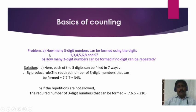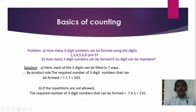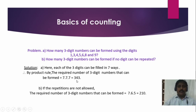How many 3-digit numbers can be formed using the digits 1, 3, 4, 5, 6, 8, and 9? There are 7 digits available and each of the 3 positions can be filled in 7 ways. By the product rule: 7 into 7 into 7 equals 343 ways. If repetition is not allowed, then it is 7 into 6 into 5 equals 210 ways. When repetition is allowed: 343; when not allowed: 210.